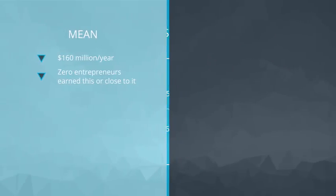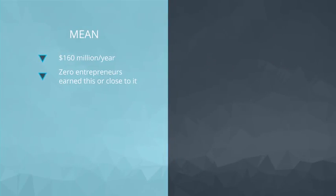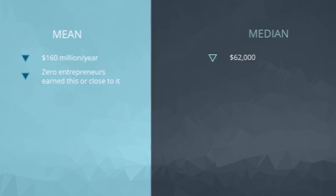A better measure of center would certainly be the median. The median here is calculated as $62,000 a year, and is a better indication of what an entrepreneur is likely to earn based on our data.